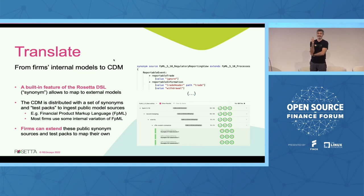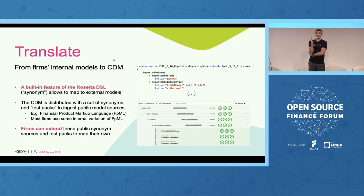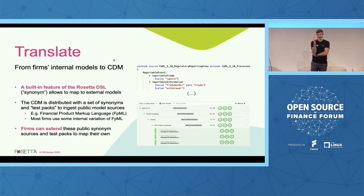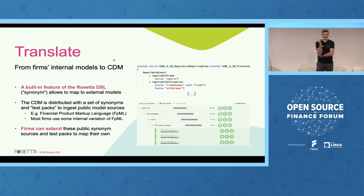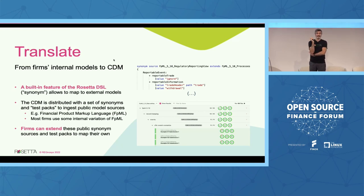How do you translate from a firm's internal models to CDM? This is a built-in feature in the Rosetta DSL that allows mapping to external models. The CDM is distributed with a set of synonyms and test packs that allow you to ingest from public model sources. An example is the Financial Product Markup Language — FPML — which is widely used by most firms in their confirmation systems. Firms can extend these public synonym sources and the test pack to map to their own internal models.